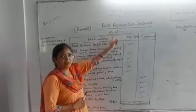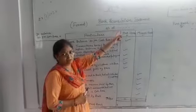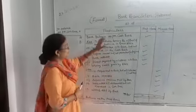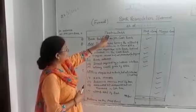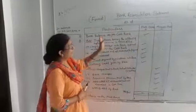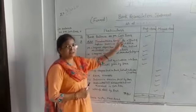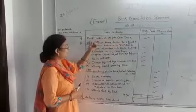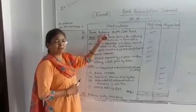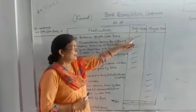I am going to write a particular date. Here is the format. I am going to write the plus items and minus items. I am going to write Bank Balance as per Cash Book. If you write Bank Balance or Balance as per Cash Book, this is a positive balance — a plus item.